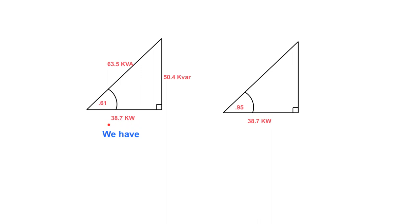We know that our kilowatts don't change because they're based on the resistive element. So the kilowatts move over, so we have 38.7 kilowatts, but now we know that our power factor has changed. This 0.95, that's completely changed from the 0.61, because this is what we had or have. This is what we want.